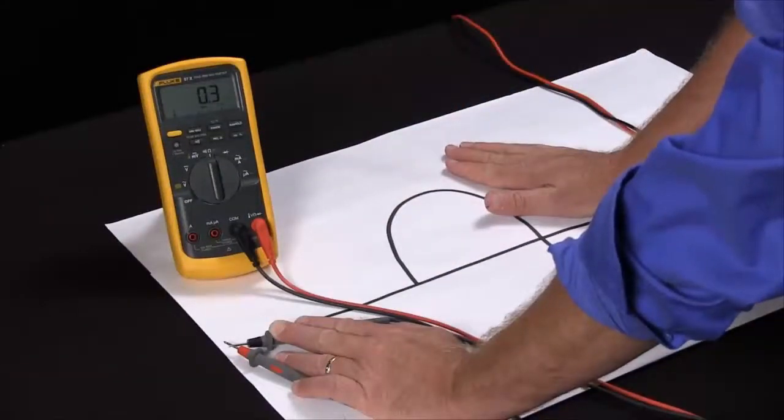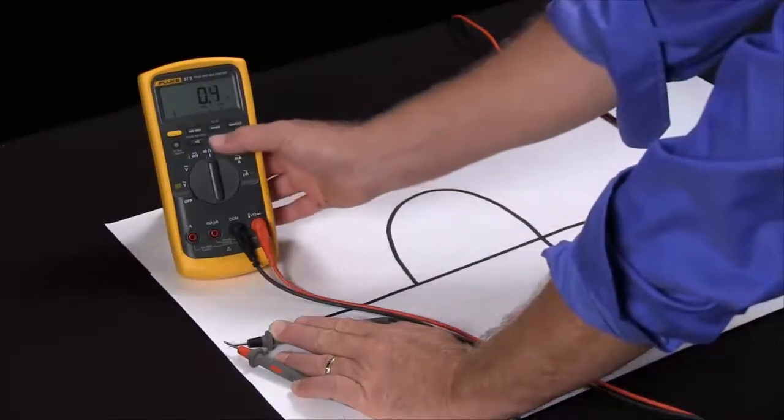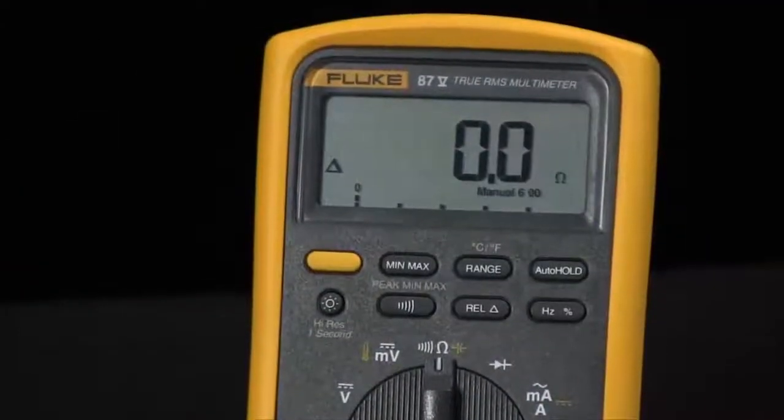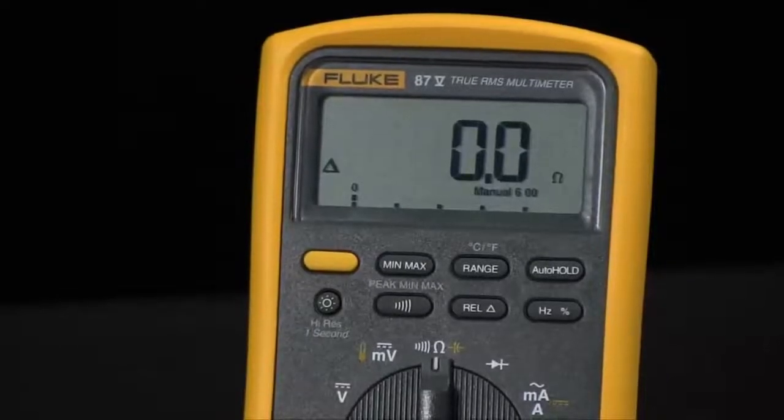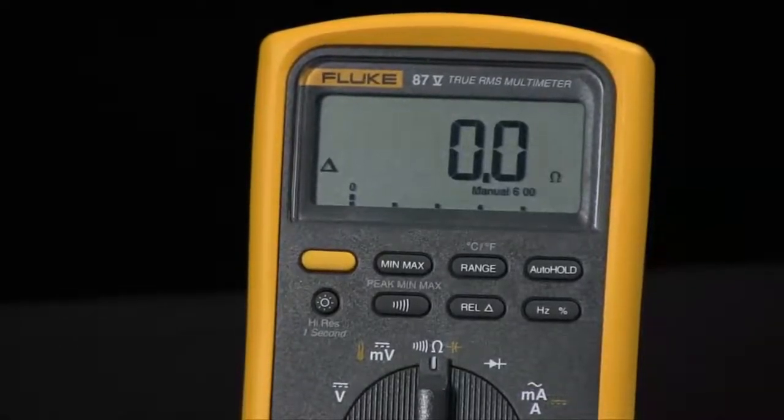If I want to measure something accurately I either have to mentally subtract that or if I hit the relative mode it takes that reading and it makes it zero. So now everything I measure will have that subtracted out of it and I'll get a more true reading.